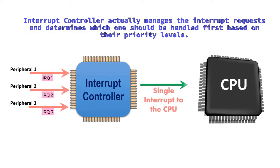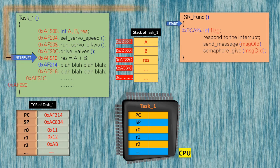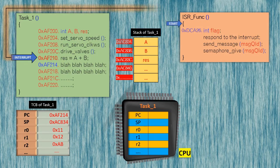Then the processor needs to save the current state of the program being executed, including the values of registers, the program counter, and other relevant information — which is nothing but the context of the task or thread. This step is crucial to ensure that the processor can resume the interrupted program or task accurately once the interrupt is handled or serviced.